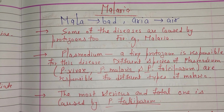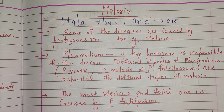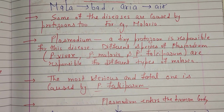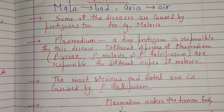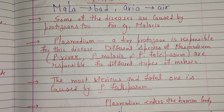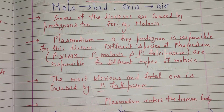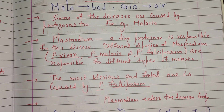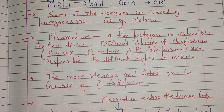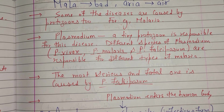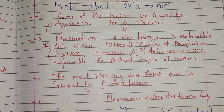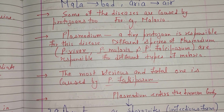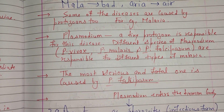Malaria is caused by a protozoan called Plasmodium. Different species of Plasmodium are responsible for different types of malaria: Plasmodium vivax, Plasmodium malaria, and Plasmodium falciparum. The most deadly and serious species is Plasmodium falciparum, which causes the most deadly form of malaria.